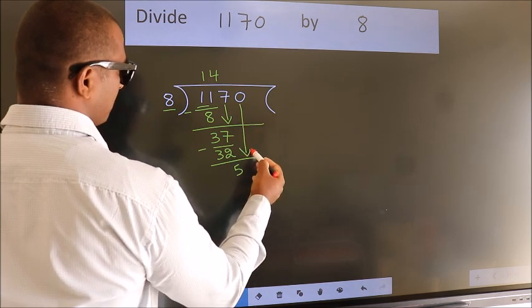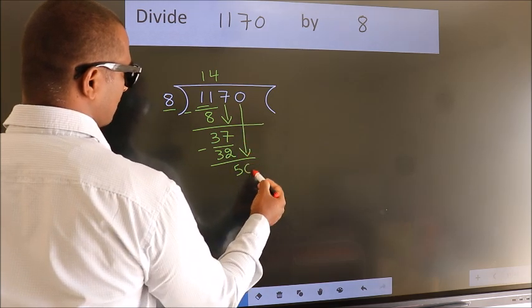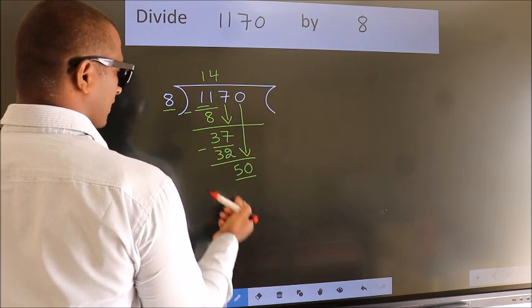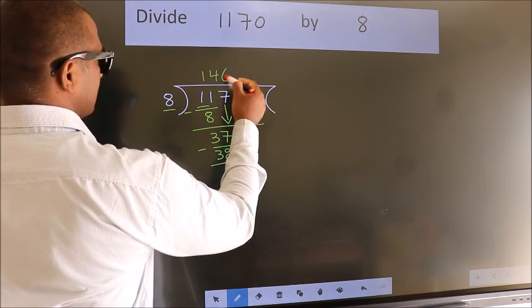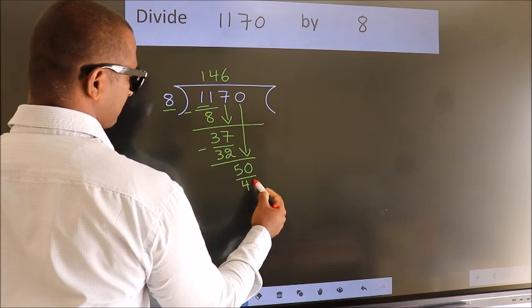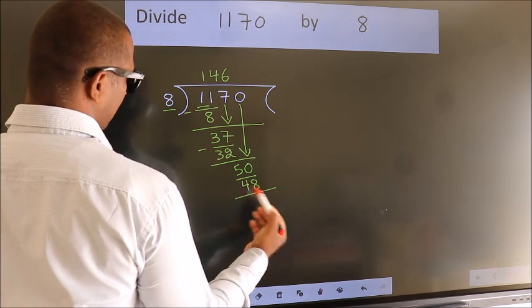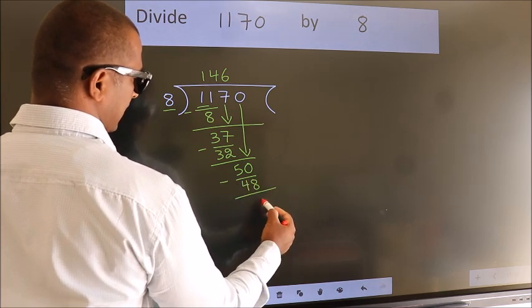bring down the beside number. So 0 down. So 50. A number close to 50 in the 8 table is 8, 6, 48. Now we subtract. We get 2.